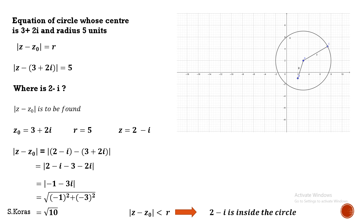To summarize: to find whether a given point is inside, outside, or on the circle, consider the given point as Z and the center as Z₀. Find modulus of Z minus Z₀. If this distance is less than the radius, the point is inside. If equal to the radius, the point is on the circumference. If greater than the radius, the point is outside the circle. This is a very simple concept and you can practice many problems from your textbook.